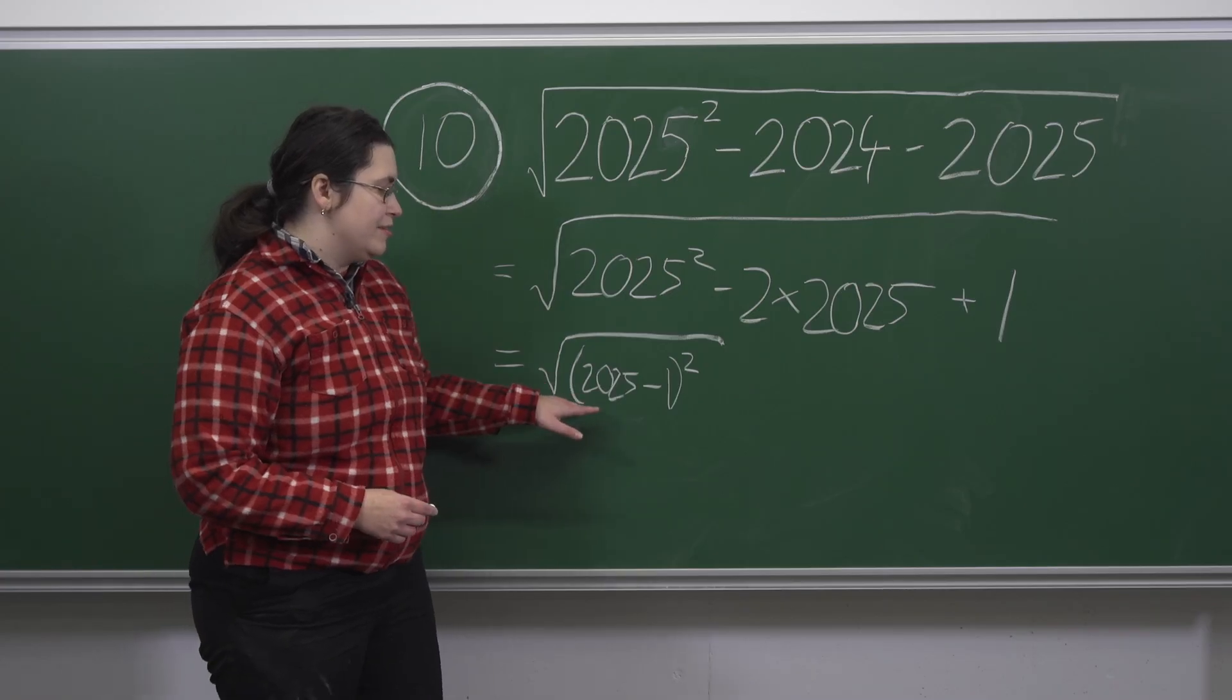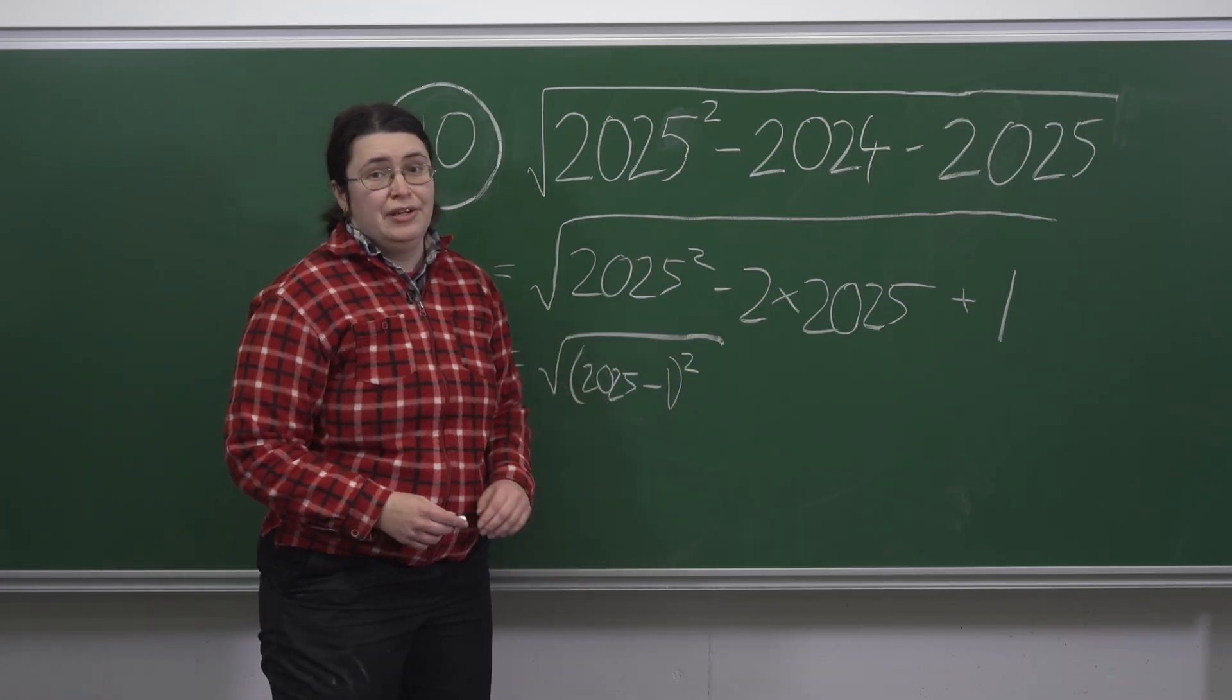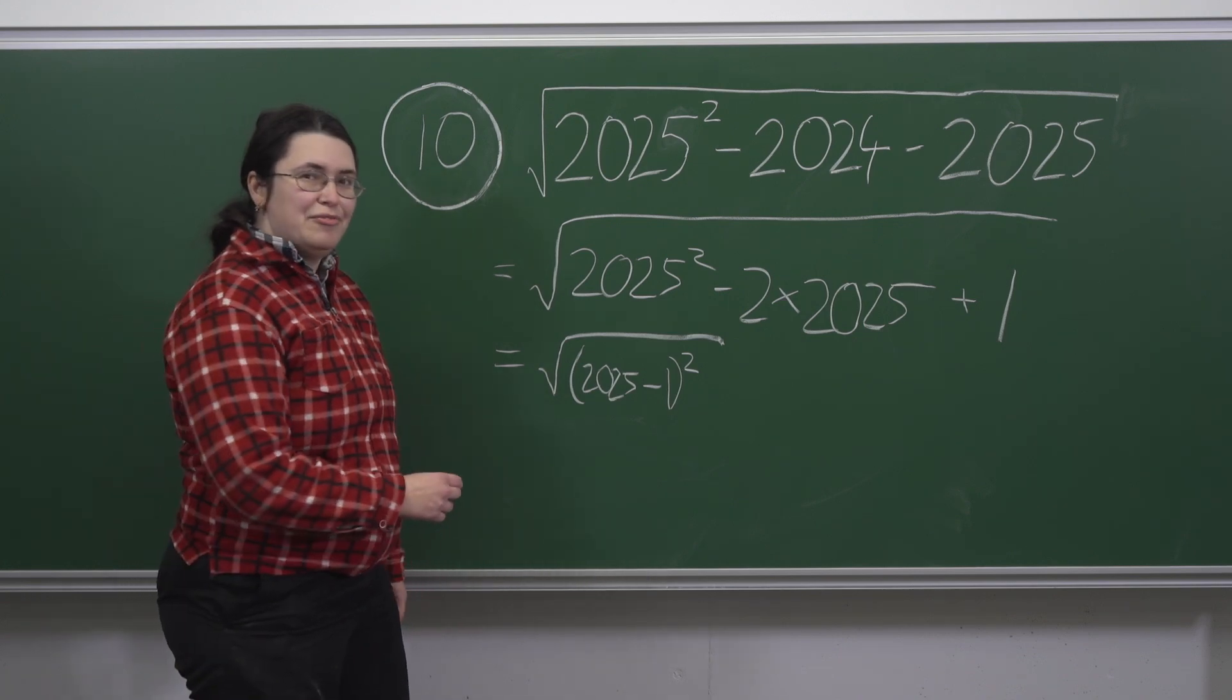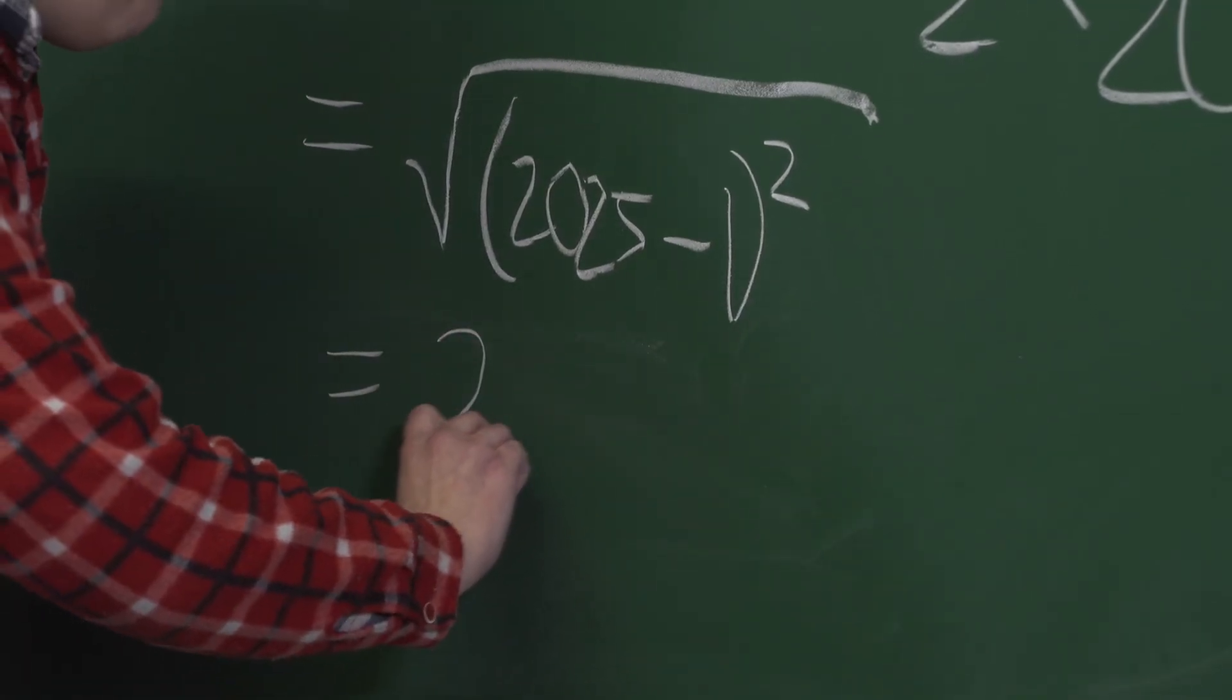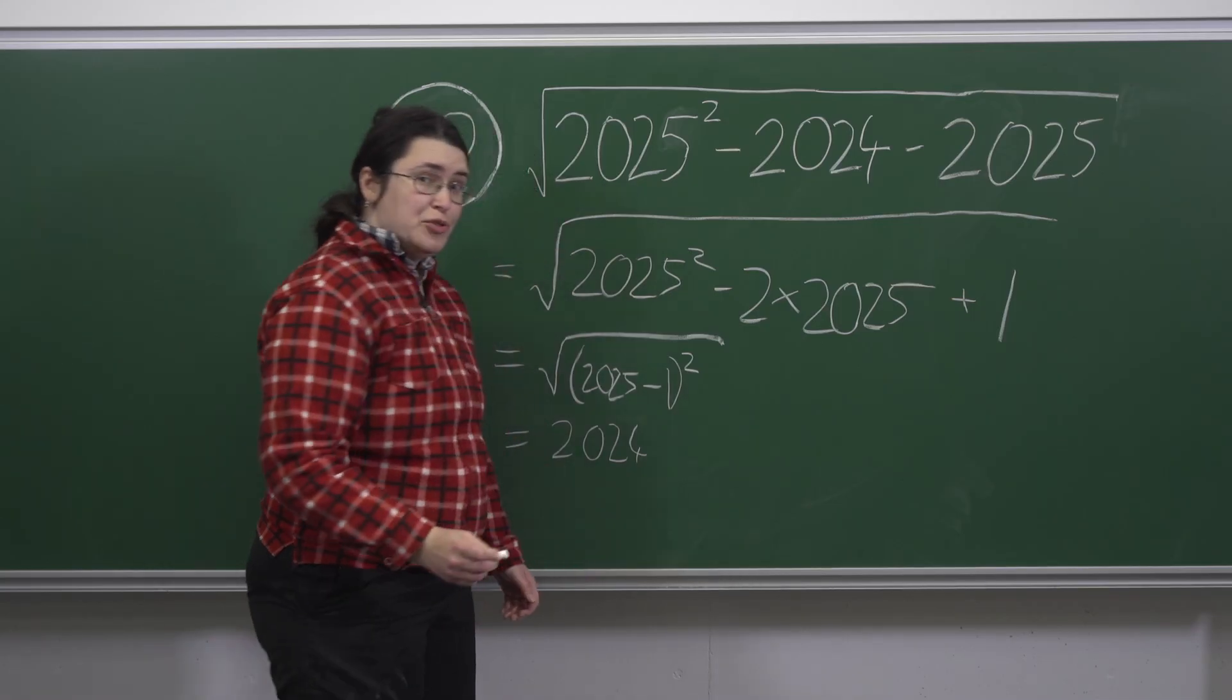We can see that this is simply 2024 squared and then square rooted. So the answer is 2024, which is option C.